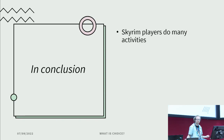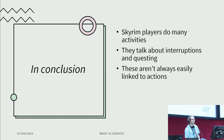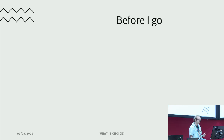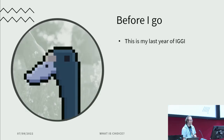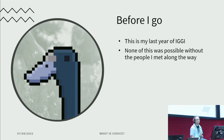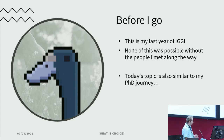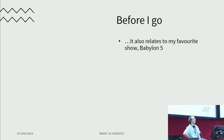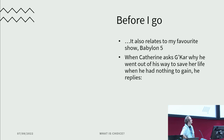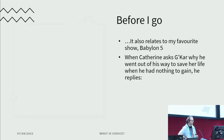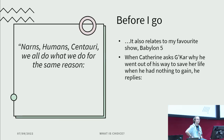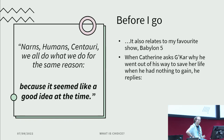In provisional summary: Skyrim players do a lot of things. They talk about their interruptions and their questing. But these aren't always easy to link to their actions, because there are so many actions related to their goals — it's not a clean mapping. It's very complex, and there's a lot to explore at an individual level. None of this would be possible without the people I met, so thank you. As I was reflecting, I realised this topic is similar to my PhD in other ways, and relates to my favourite show — Babylon 5 — specifically a moment in season one when Chakotay asks a character: 'You saved my life, you had nothing to gain — why?' And the reply is: 'We all do what we do for the same reason. Because it seemed like a good idea at the time.' Thank you.